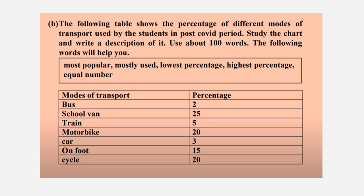The percentages are: bus 25%, train 5%, motorbike 20%, car 3%, on foot 15%, and cycle 20%. The helper words given include: most popular, mostly used, lowest percentage, highest percentage, and equal number.